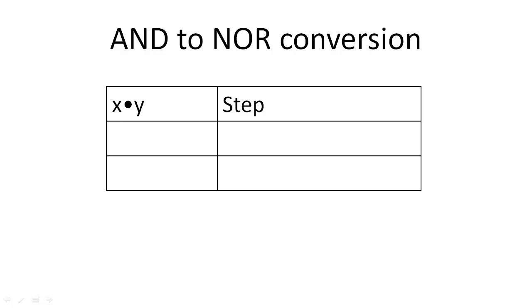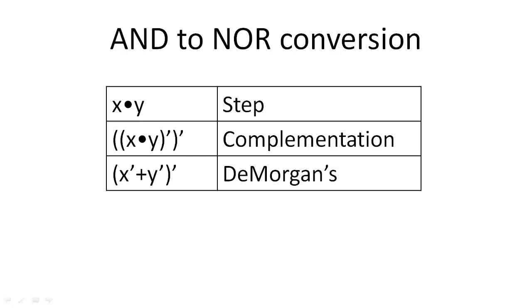Let's look first at the AND to NOR conversion. First, we double complement the AND operation. Then, we apply De Morgan's Law to convert the interior parentheses into an OR. Consequently, our final expression is a NOR expression.